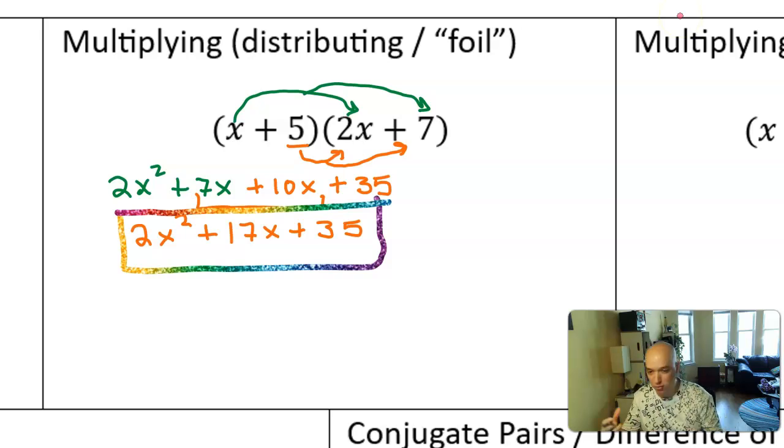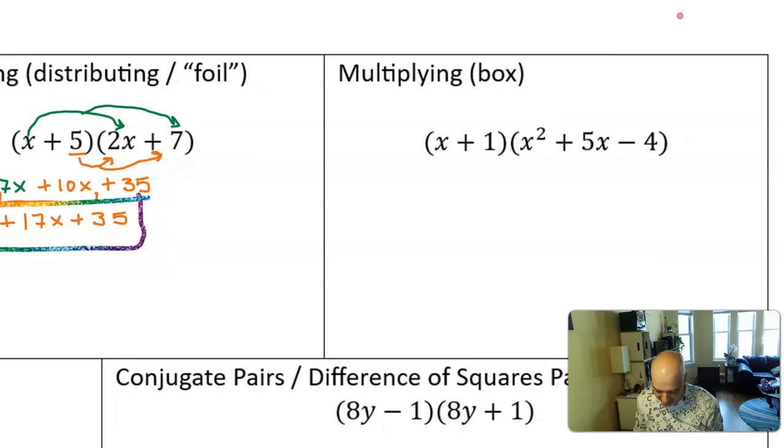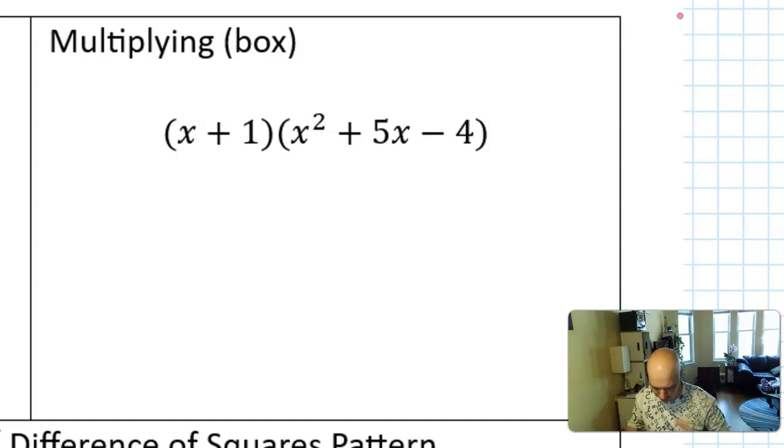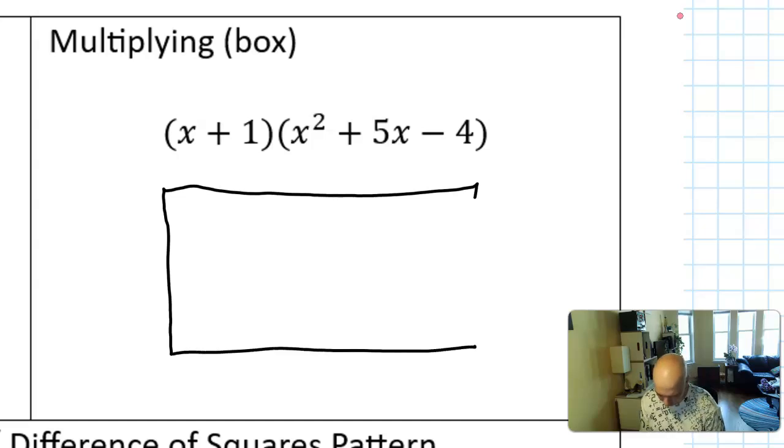Now this is great, this kind of drawing the arrows everywhere, is great when you have a binomial times a binomial. Binomial is with two terms. But what if you have a binomial times a trinomial? I want to show you, and you may have seen this before, how to multiply using a box. It's just nice when you start to get a lot of terms. So you just draw a rectangle like this, or a table, you don't have to make a whole rectangle. And you put the terms of one of your polynomials here. So we have x plus 1. And I put another part up here, the terms of the longer polynomial x squared plus 5x minus 4.